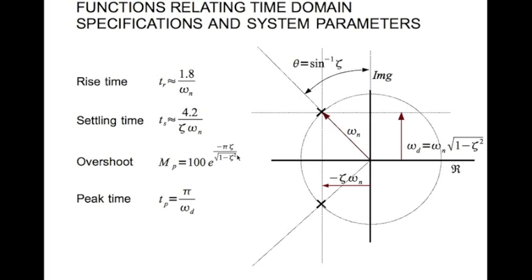And the peak time is given by tp equal to pi divided by omega d, where omega d is the damped natural frequency.